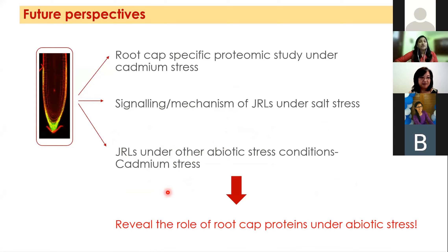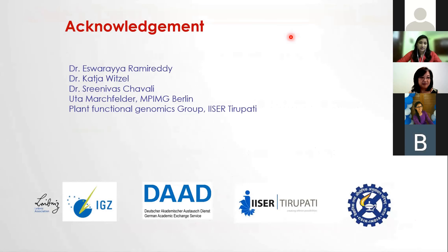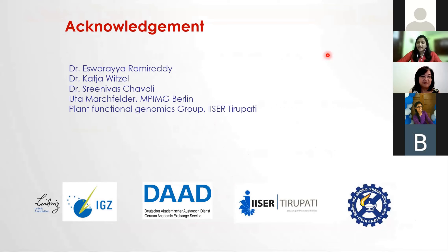By looking into the landscape of proteins present in the root cap under abiotic stress and elucidating the role of JRLs, our study will reveal the importance of the root cap in helping plants survive abiotic stress conditions. I would like to acknowledge both my supervisors, Dr. Ishwar Rambireddi and Dr. Katya Witzel, and all my colleagues at the Plant Functional Genomics Group at ISA Thirupadi for their kind support. Thank you everyone for your kind attention.